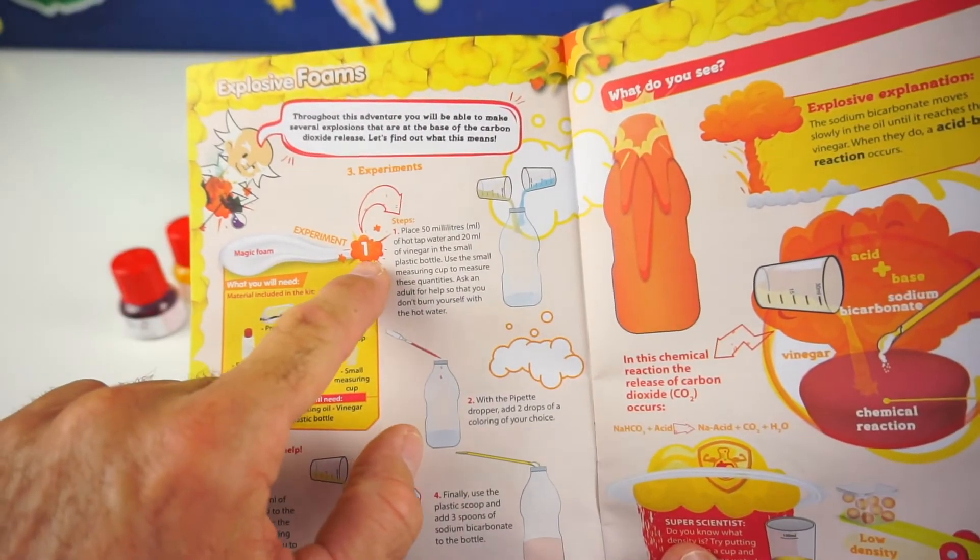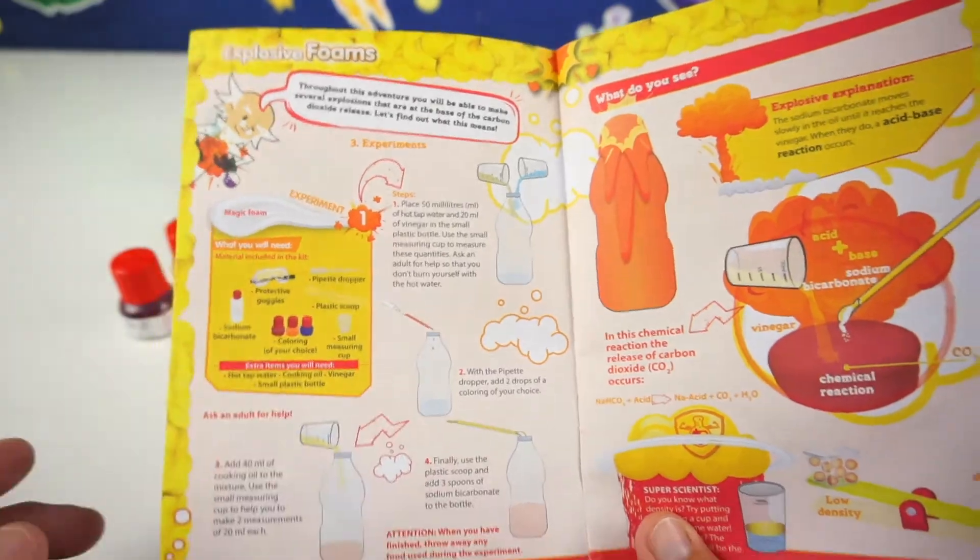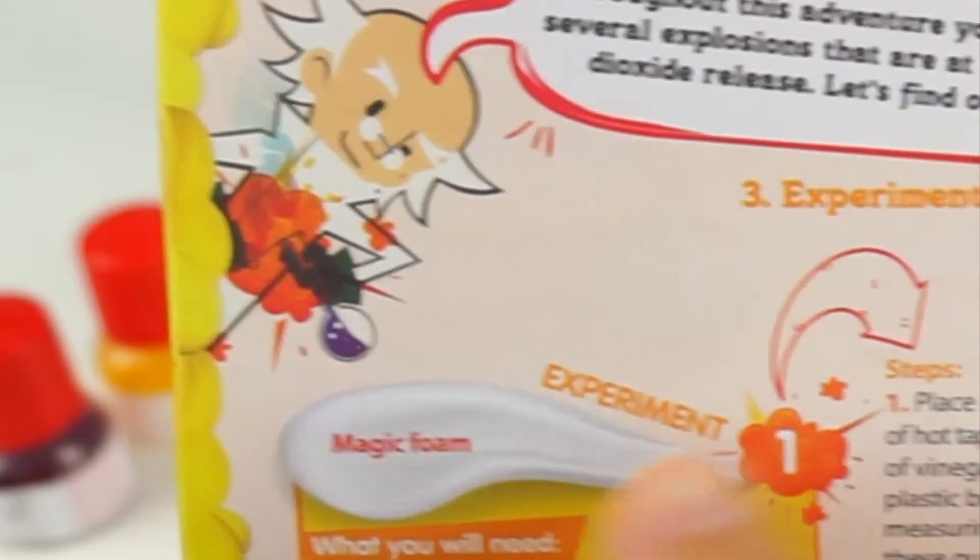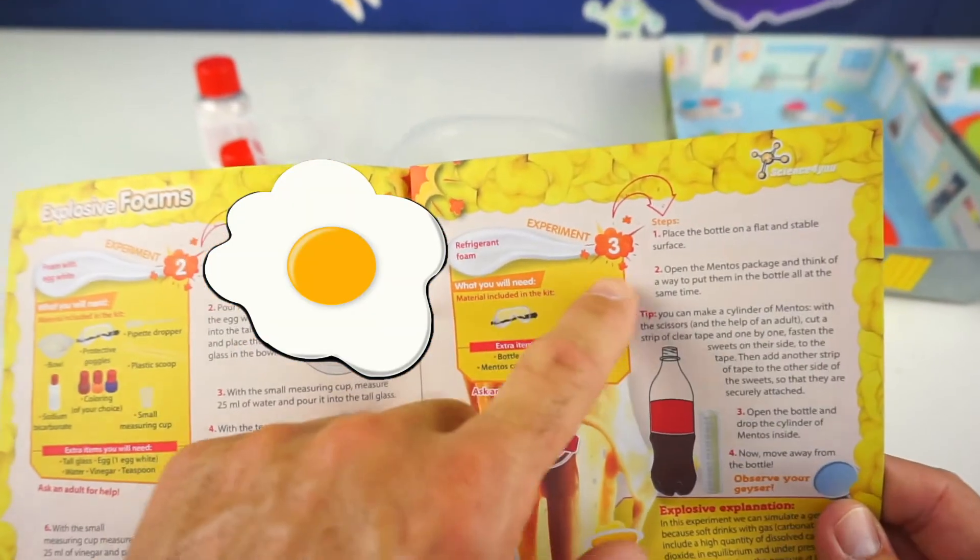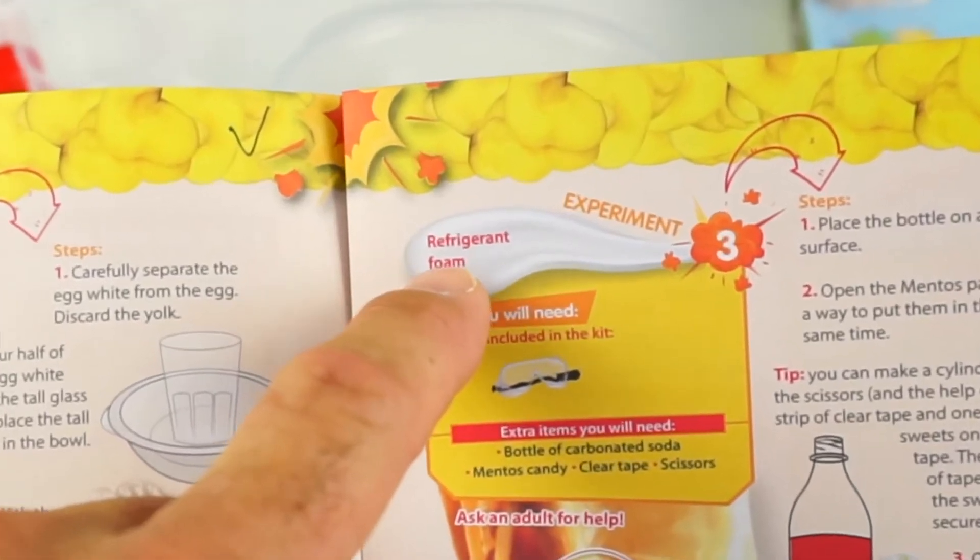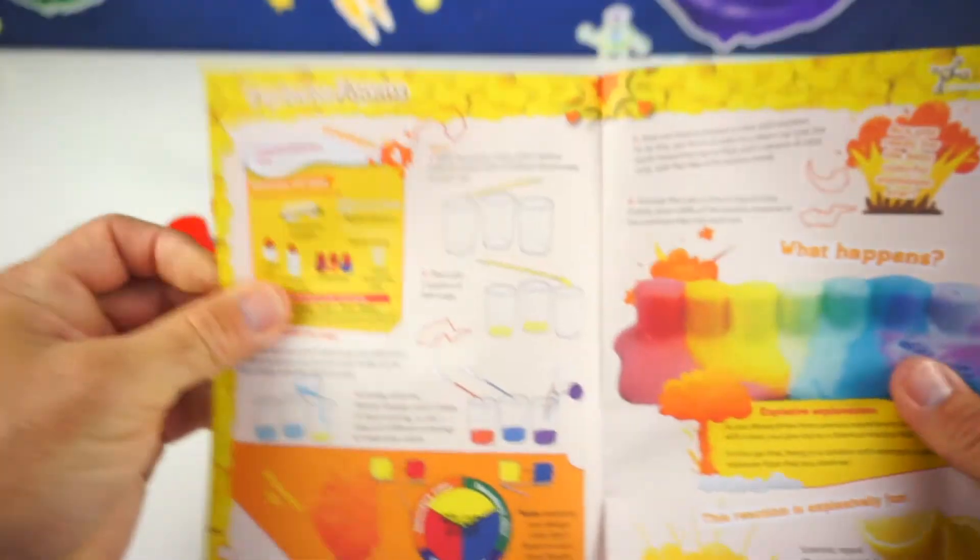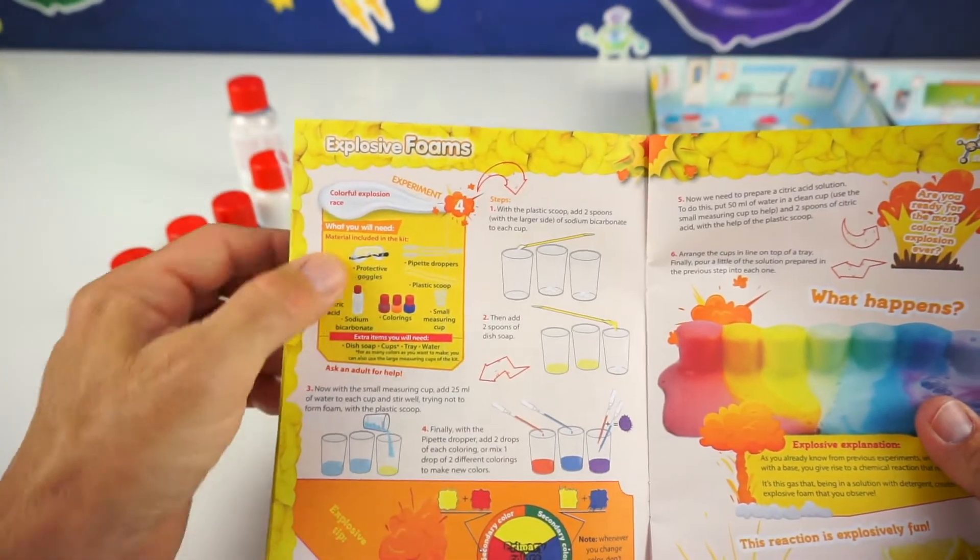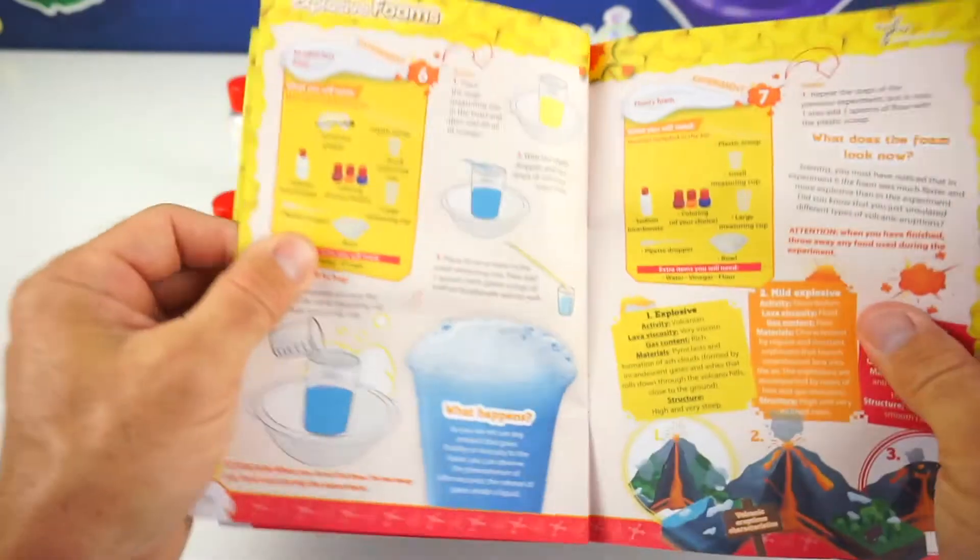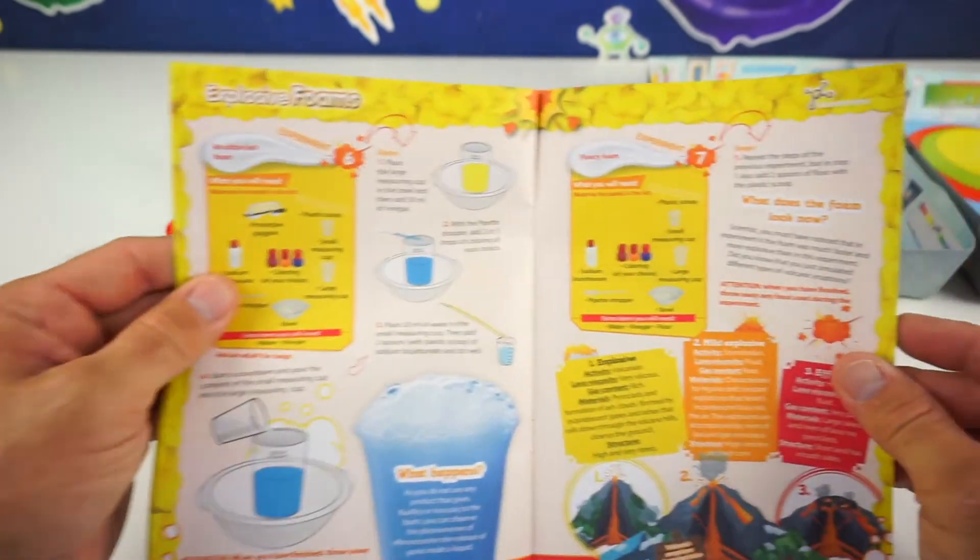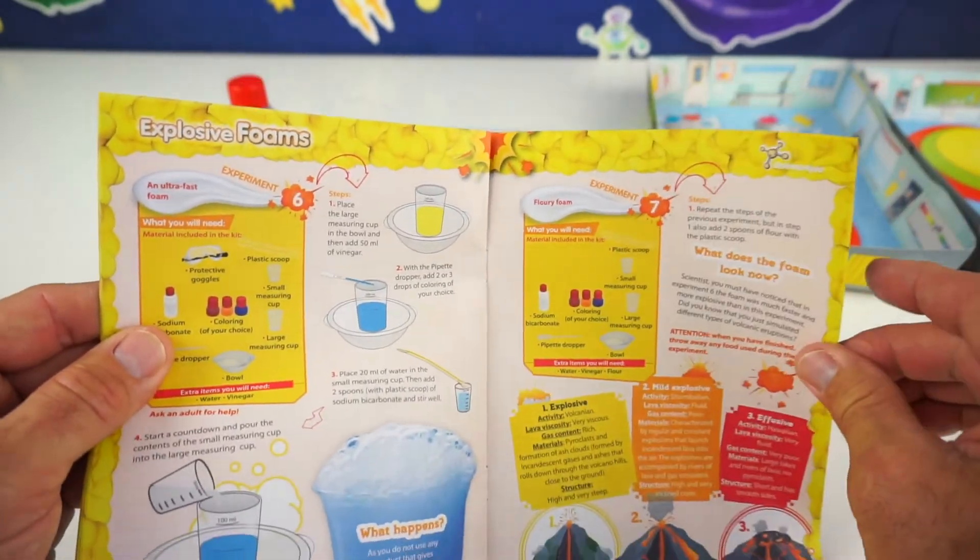And this number one experiment is right here on this first page. And it's called magic foam. The second experiment is called foam with egg whites. Experiment number three is called refrigerant foam. Number four is colorful explosion race. Okay, that looks cool. Explosive bombs are number five. Oh no. Ultra fast foam, number six. Flurry foam, number seven.